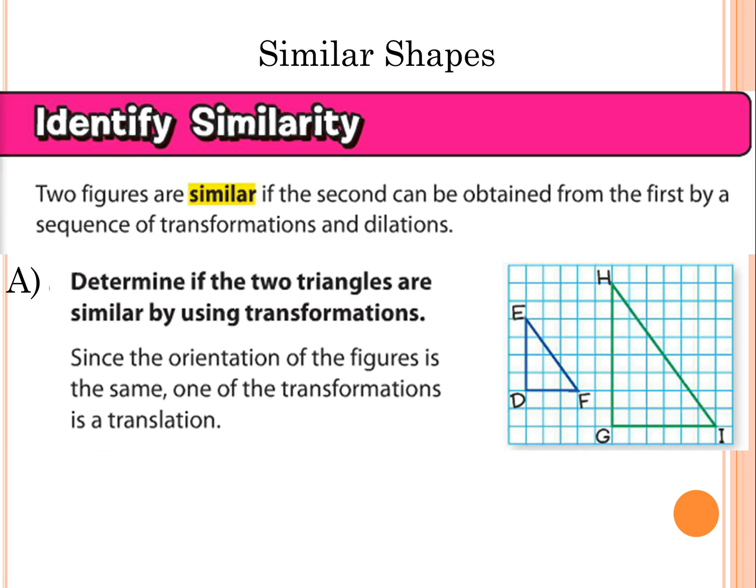So because the triangles are facing the same direction, like both of them have the straight side on the left and the other straight side at the bottom, and the slanted side is on the upper right, then we know that that is a translation, so it's been slid across. But we don't know if they are similar yet, so what we're going to do is we're going to check the ratios of the links.